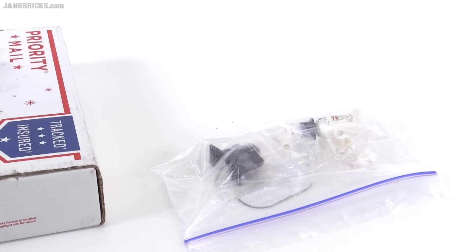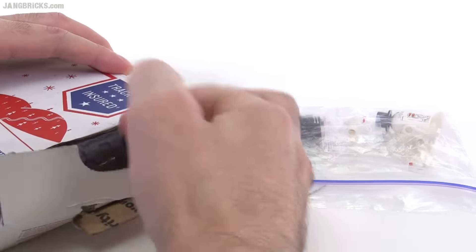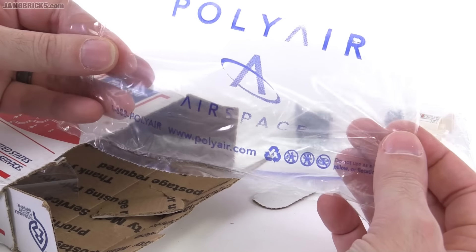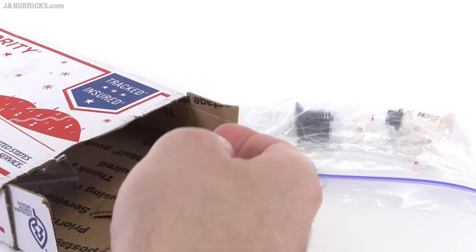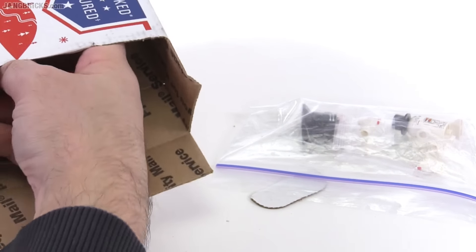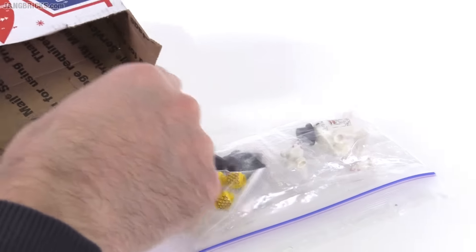Well, this is a small haul that the camera's having trouble focusing on. Let's see if this one has more in it. Oh, more airspace. These are from two completely different sellers on BrickLink. But both of them use airspace airbag packaging material things.